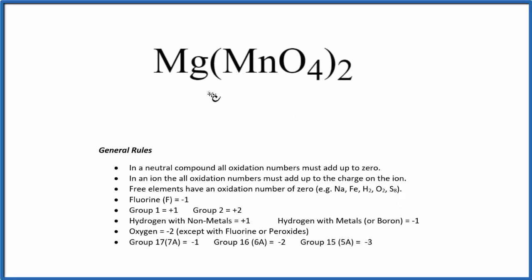Let's look at the oxidation numbers for each element in Mg(MnO4)2. That's magnesium permanganate. We have the rules here, and the first thing we know is this is a neutral compound. There's no plus or minus, so it's neutral. Because it's neutral, all the oxidation numbers will add up to zero.